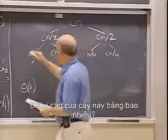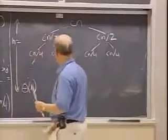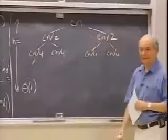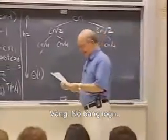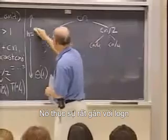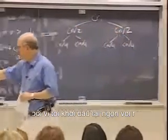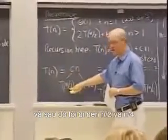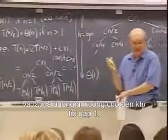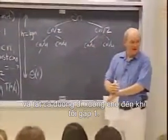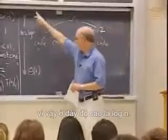The first question I ask is: what is the height of this tree? It is log n — actually very close to exactly log n — because I am starting out at the top with n, then going to n/2 and n/4, all the way down until I get to one. The number of halvings of n until I get to one is log n, so the height here is log n.